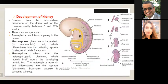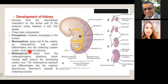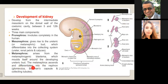The kidney develops from the intermediate mesoderm on the dorsal wall of the coelomic cavity between 5 to 12 weeks. There are three main developmental components: the pronephros, which involutes completely in humans; the mesonephros, which gives rise to the ureteric bud differentiating into collecting system, ureter, renal pelvis, and calyces; and the metanephros, which arises from the metanephric blastema, ascends, and differentiates into nephrons forming the glomeruli, Bowman's capsule, and collecting system.